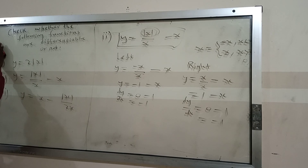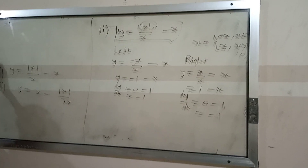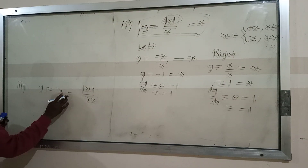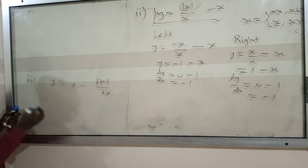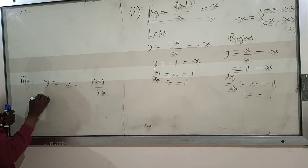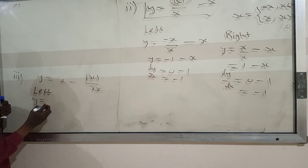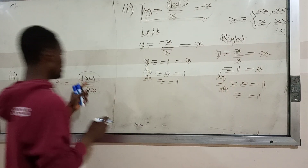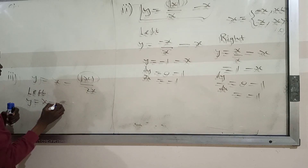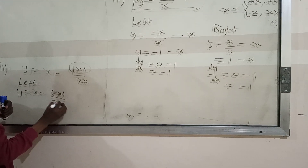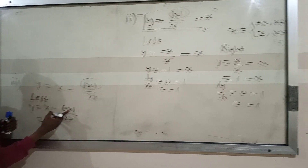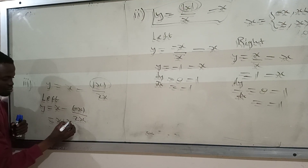Now for the third function: y equals x minus |x| divided by 2. For the left hand side, we substitute negative x in place of |x|, so we get y equals x minus negative x over 2. The negative negative gives positive, so we get positive x over 2.